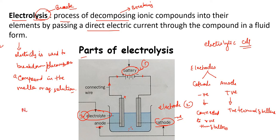For ions to flow freely, the compound must either be in the molten state or in an aqueous state — dissolved in water so it separates into ions, decomposing into cations and anions. For example, if sodium chloride (NaCl) is used as the electrolyte, it forms Na⁺ (cation) and Cl⁻ (anion). The anion is attracted to the positive anode, and the cation (Na⁺) is attracted to the negative cathode.